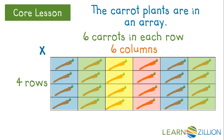Four groups of six carrots. We can read an array from left to right to build a multiplication equation. So this is four rows times six columns. Four times six equals twenty-four. There are twenty-four carrot plants in the garden.